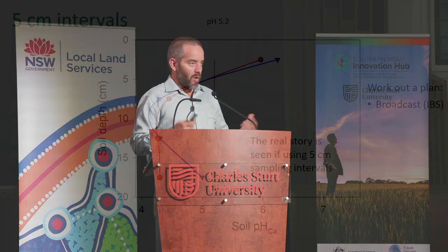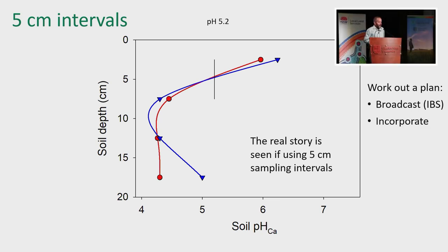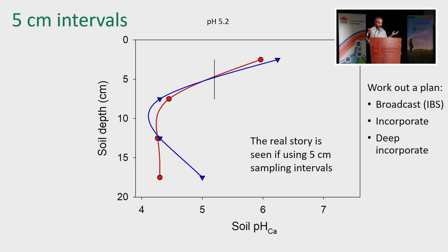Having this sort of information allows you to work out a plan. Do you broadcast lime and incorporate when you sow that pasture? And flagging that cultivation does not equal incorporation — ripping something is not mixing; mixing is what you want when you want to mix lime in. Or do you need to deep incorporate? If you were going to put lime in to get rid of the acidity on the blue line, you'd want to mix it down to probably 12 centimetres or so if you wanted to fix the problem today. Or if you've got time, you could raise the pH in the 5 to 10, get the pH over 5.5, and allow more lime to move down and fix your problem in the next couple of years. You don't know what you're dealing with unless you measure it.